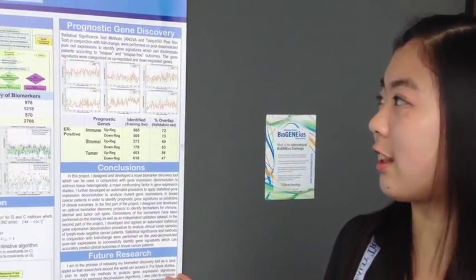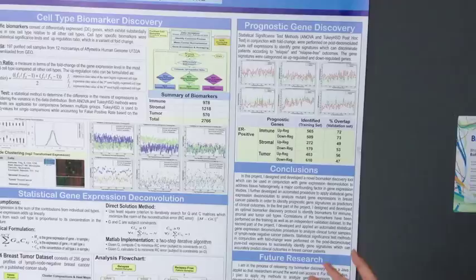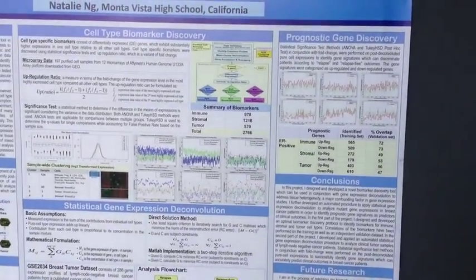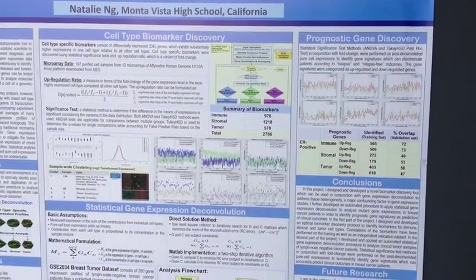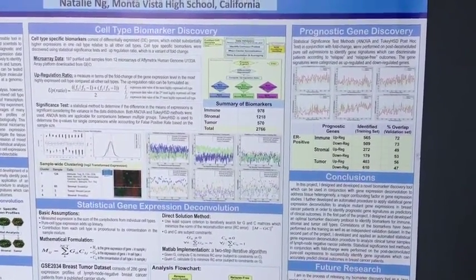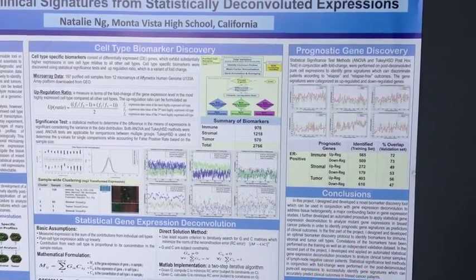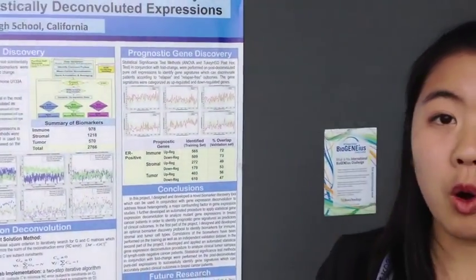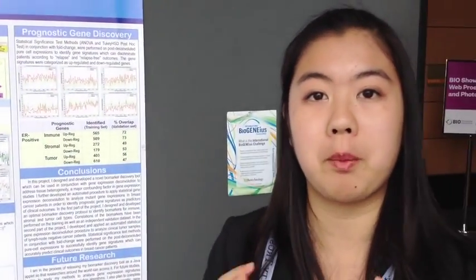In my project, the prognostic signatures I've identified are cell type specific. One of the major problems with traditional analysis being used today is that the total expression from a microarray is being used.